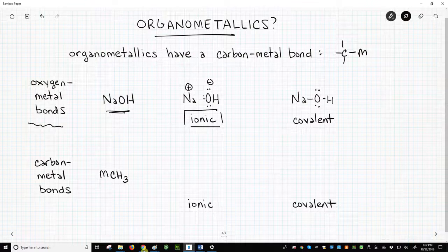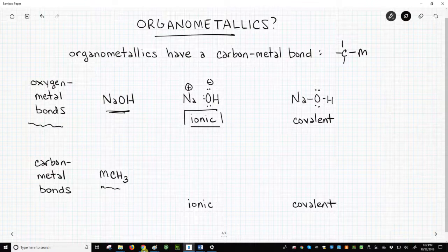So most people stick with the ionic O- representation. Let's now look at an organometallic structure with a carbon-metal bond. Note that M equals a metal. It's kind of like X equals a halogen.